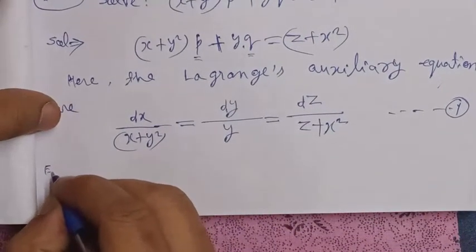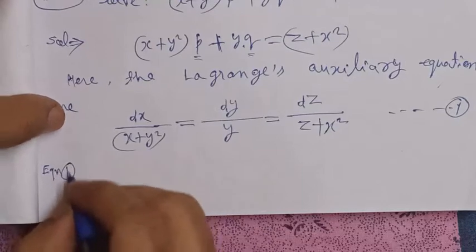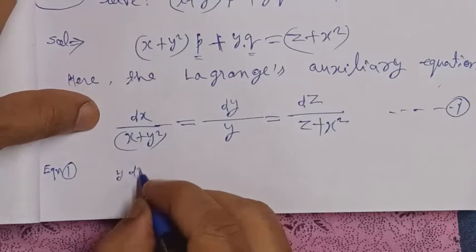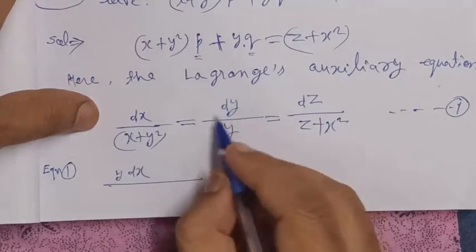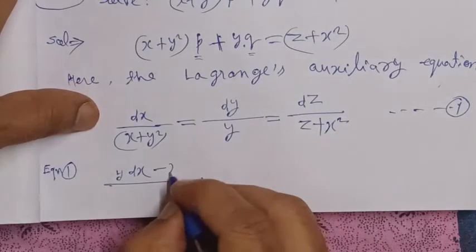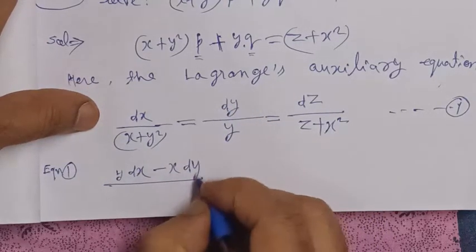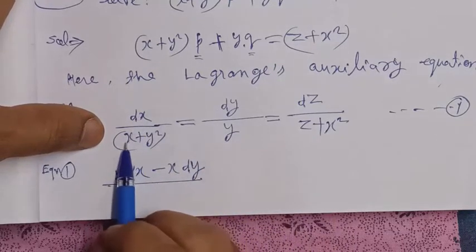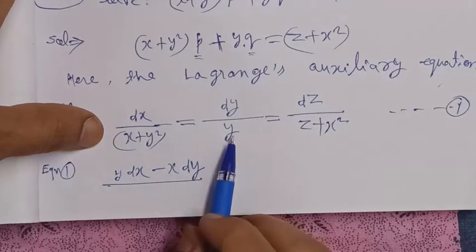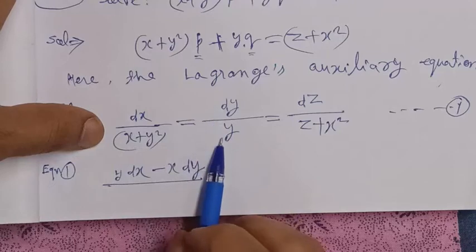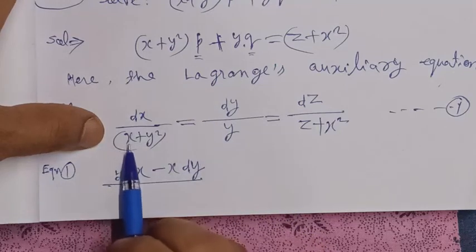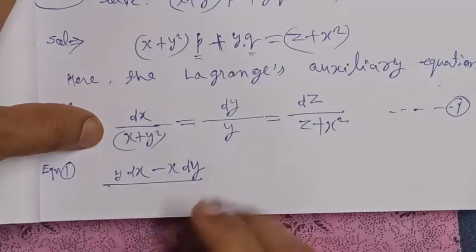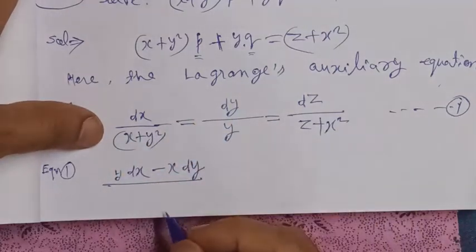From equation number one, we select and multiply the numerator and denominator. We multiply by x and y terms accordingly. When we apply the minus sign, terms cancel. This term has been added and we can transpose, so this term becomes our exact term.